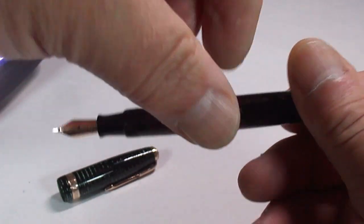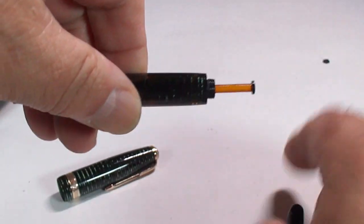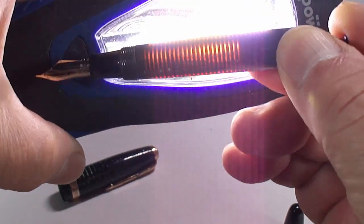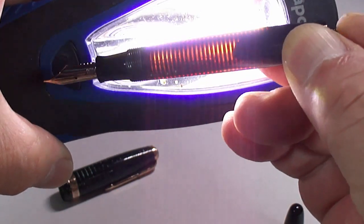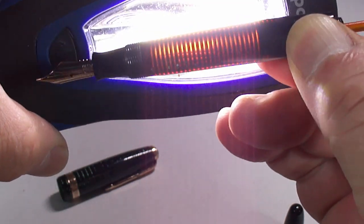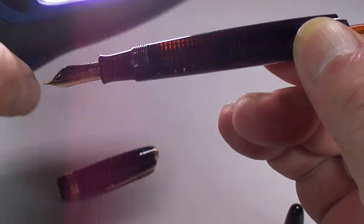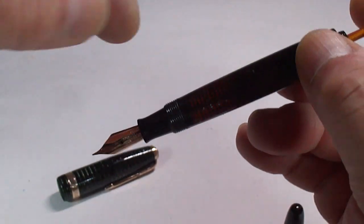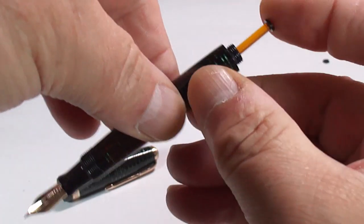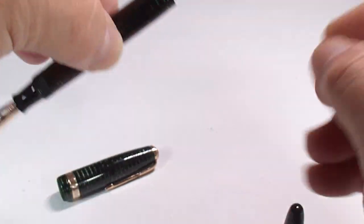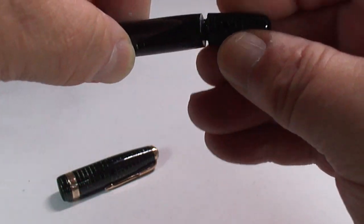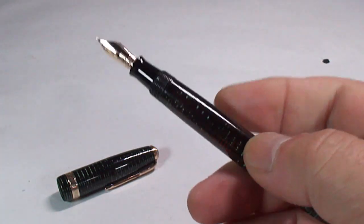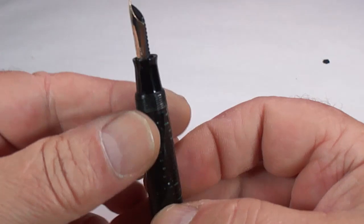And then if we actually unscrew the blind cap again for you, bring on the light again. And there you go. There's the pump working inside. So that's how we fill the pen. We dip the nib and the section in the ink, and we press down numerous times on the pump.